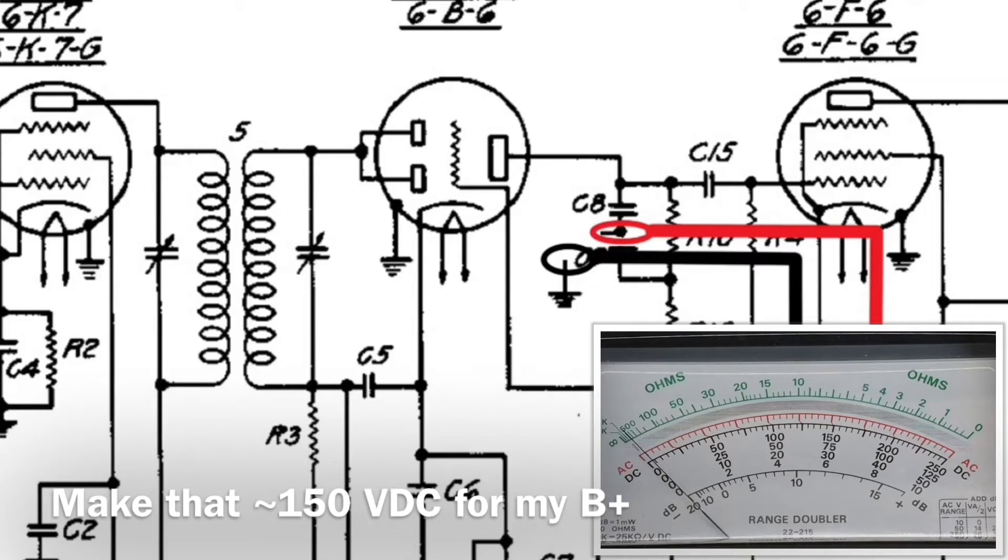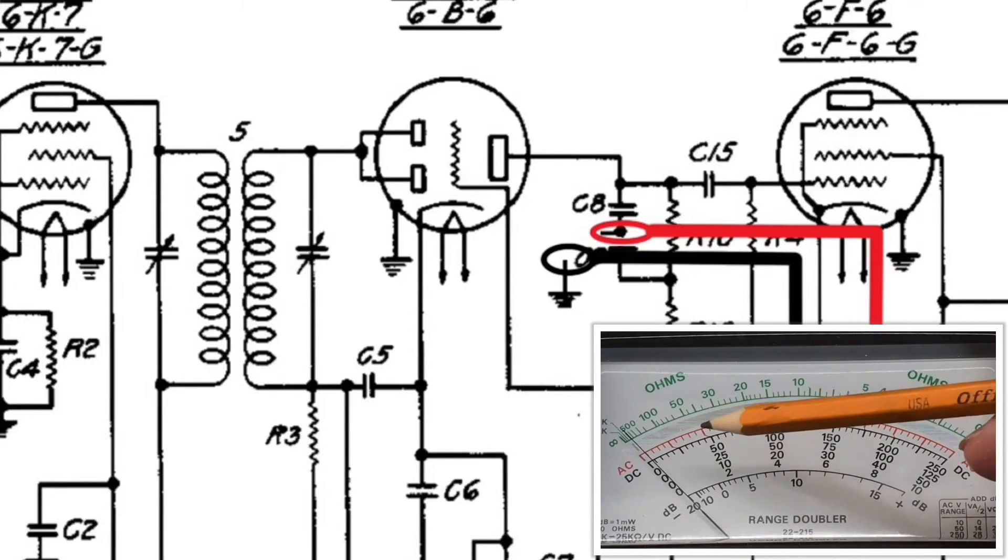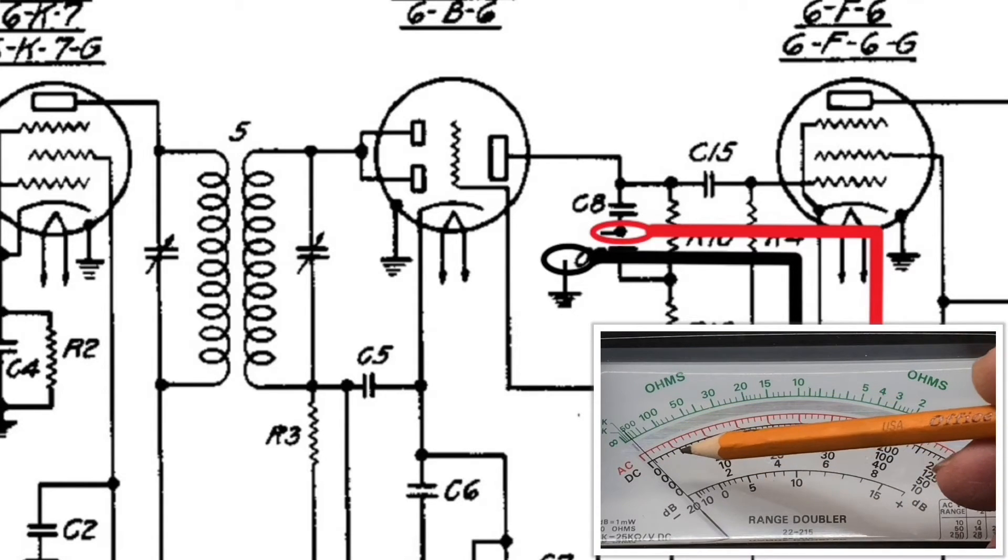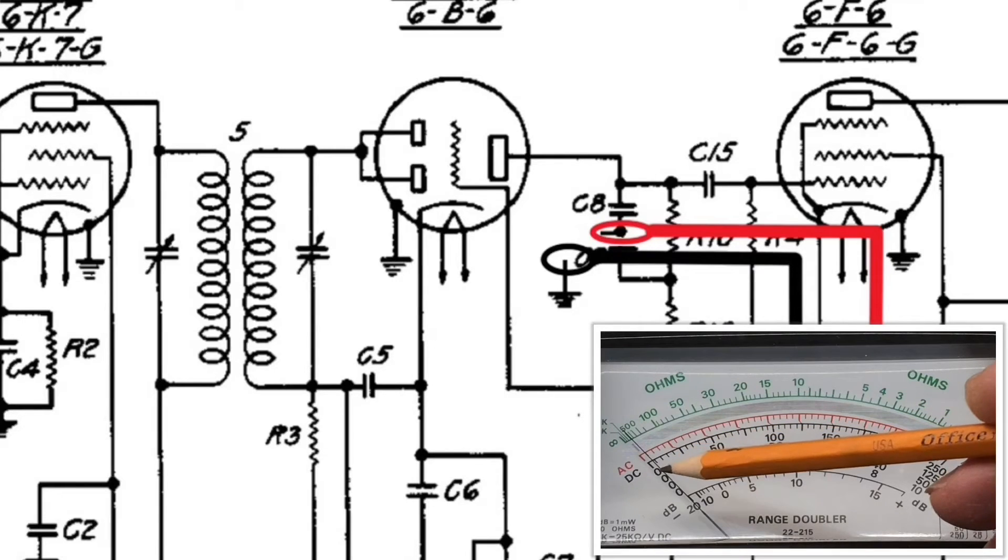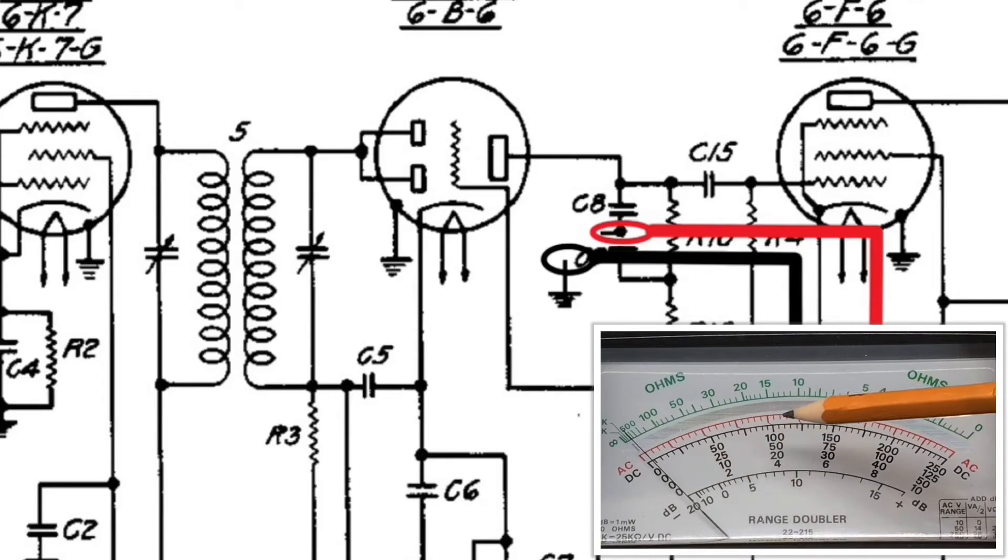So I have my meter set to 250. Let's energize the capacitor now by flipping on the B-plus voltage. Let's watch real close and see what happens here to the meter itself. What I'm looking for, you'll see the capacitor itself will charge up and it will come close to my 100 volts that I'm going to apply to the capacitor.